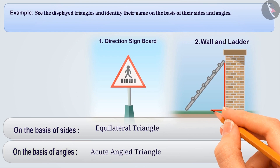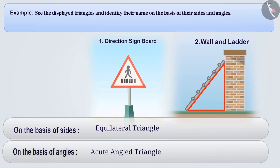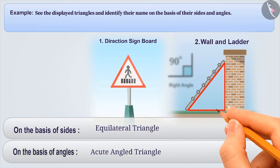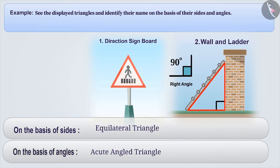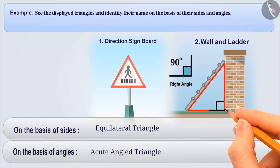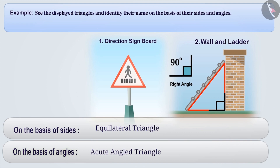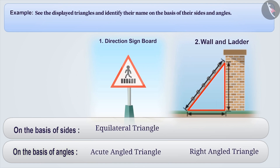In the second figure, a ladder is making a triangle with the wall and the ground. We know that a wall makes a right angle with the ground. In this way, we can say that there is one right angle in this triangle. Therefore, on the basis of angles, we can call it a right angle triangle. But if we observe carefully, we find that none of the sides of the triangle are equal. Therefore, on the basis of sides, we can say that this triangle is a scalene triangle.